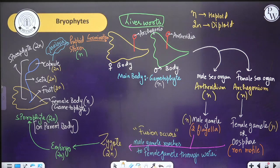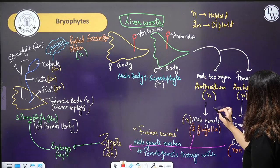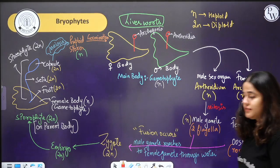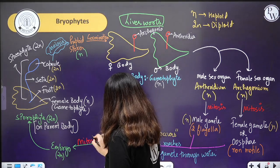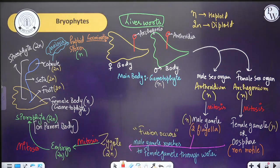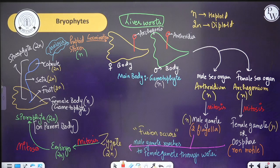After this, we are going to understand mosses, which will be the last topic for today. We have almost completed bryophytes. Remember: in the gametophyte mitosis occurs, but in the capsule meiosis occurs. Keep track of which structures are haploid and which are diploid — this is very important.